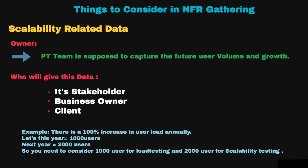Let's discuss scalability-related data. The performance team is supposed to capture the future user volume and growth. Let's suppose this year we have 1000 users in our application — what could the workload be next year, or the year after? This data comes from the stakeholder, business owner, or client. For example, if there is a 100% increase in user load annually, then next year it should be 2000 users. When designing the workload model, consider 1000 users for load testing and 2000 users for scalability testing.